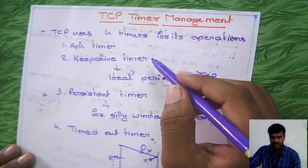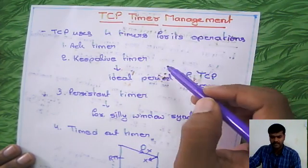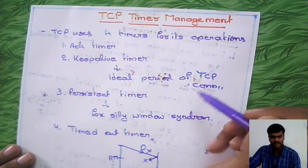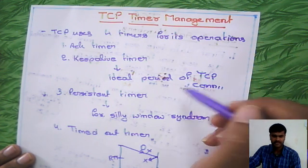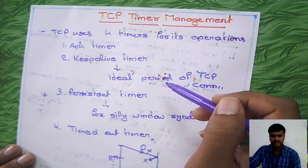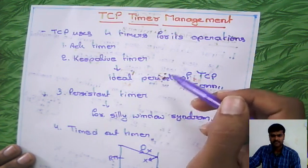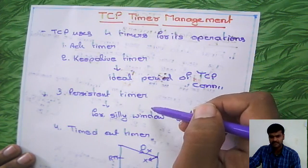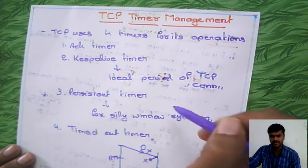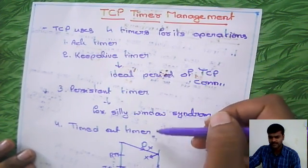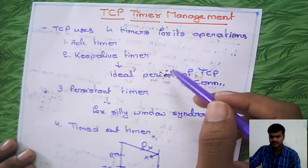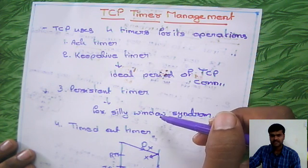So altogether, these are the four timers used in TCP: Acknowledgement Timer, Keep Alive Timer for the idle period of the TCP connection, Persistent Timer specially for Silly Window Syndrome, and TimedOut Timer. These are the four timers in TCP connection. Thank you.